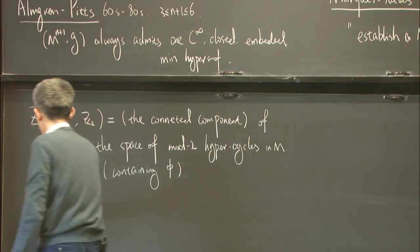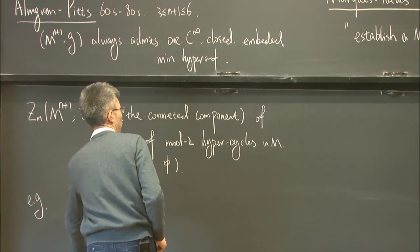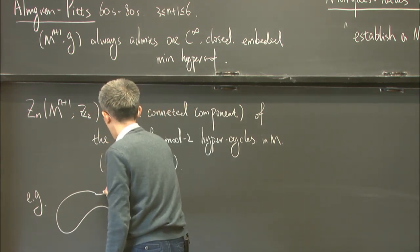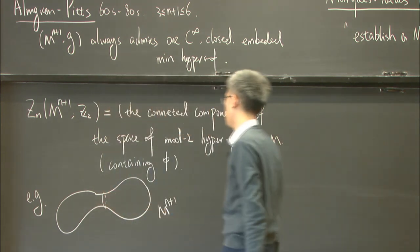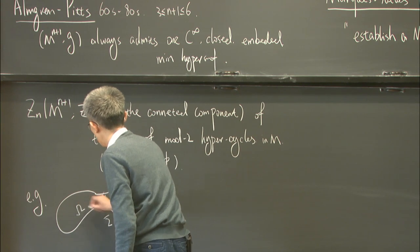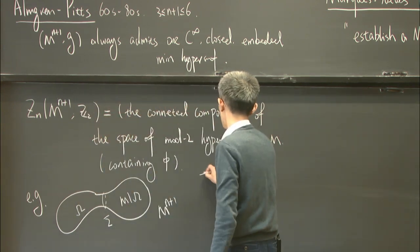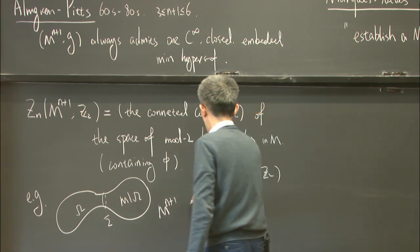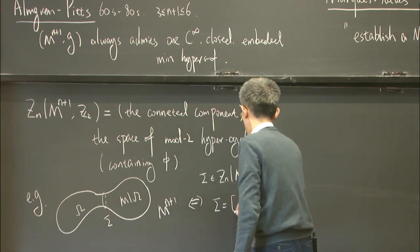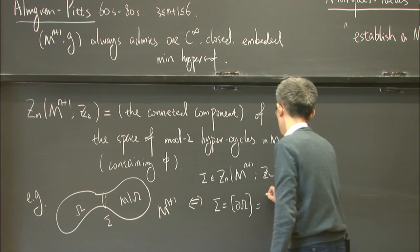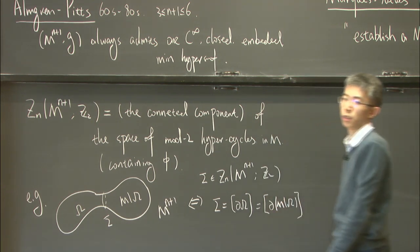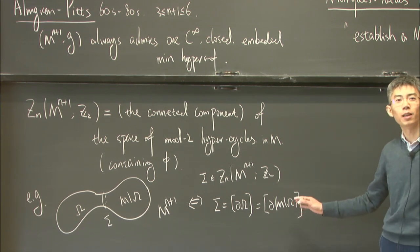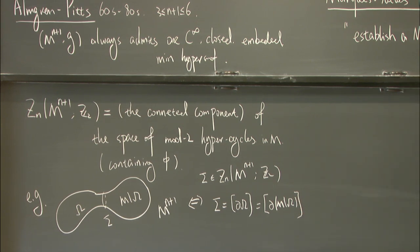A way to visualize this: an element would be a hypersurface that separates the manifold into two parts, say omega and M minus omega. We say this is in Z_n if and only if it can be written as the boundary of some domain, which is the same as the boundary of the other side. Since we use Z_2 coefficients, we don't distinguish orientation. I'll give a heuristic proof of this fact later.